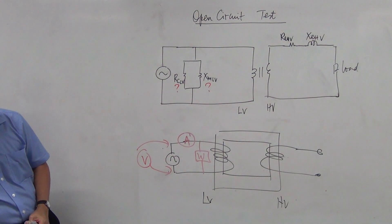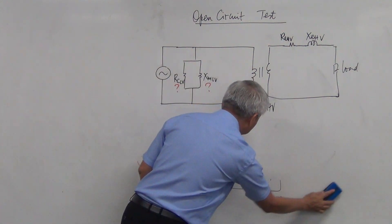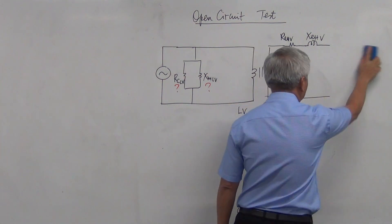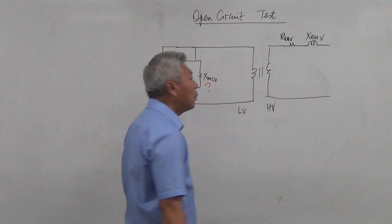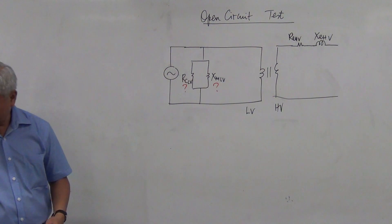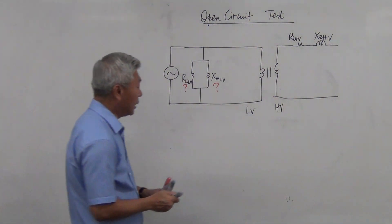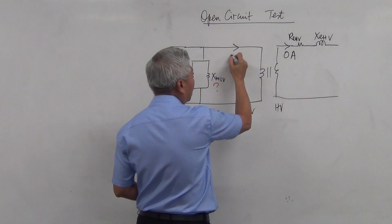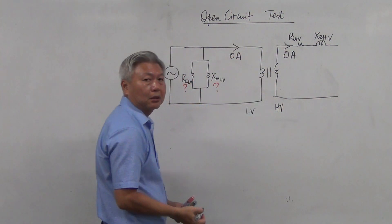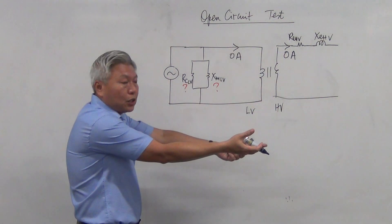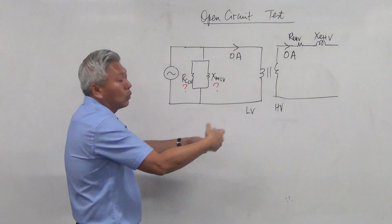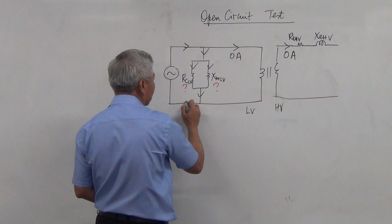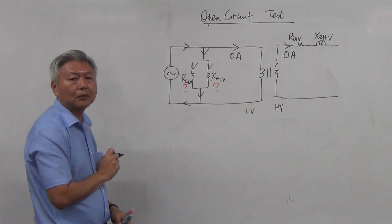How is it possible? When we leave the high voltage side open circuit, there is no current drawn — zero amperes. So the primary side will also draw no current, because the secondary side doesn't need any energy or power. The only circuit that is working now is the iron core circuit.